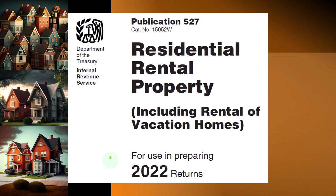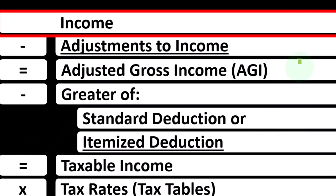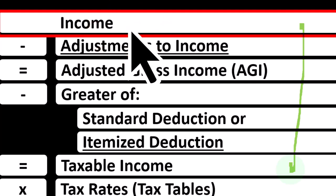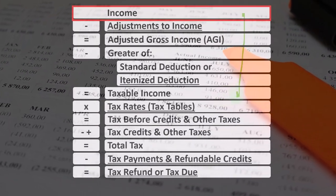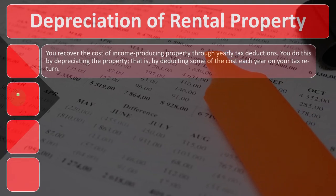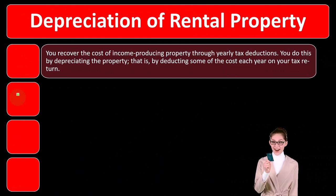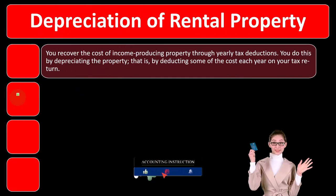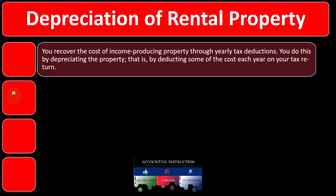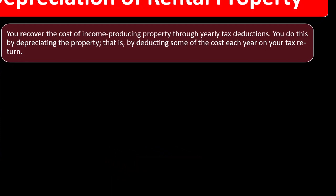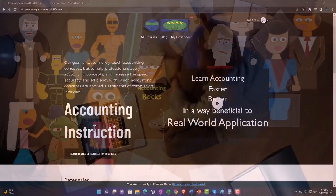Looking at the income tax formula, we're focused on line one income. The first half of the income tax formula is essentially an income statement, just an outline, with other forms and schedules flowing into these line items. One of those is Schedule E, basically an income statement with rental income minus rental expenses, with net rental income flowing into line one income of the income tax formula. We're focused now on depreciation, which is a very key component when talking about rental property, because the cost of the property will be one of the major costs, and depreciation related to that cost will be one of the major expenses, having a significant and material impact on the income taxes for the rental property.